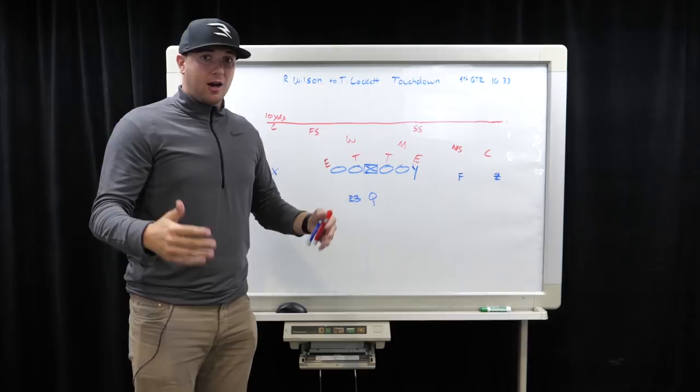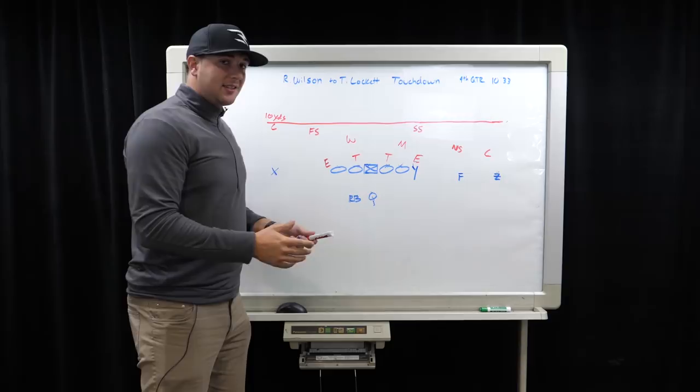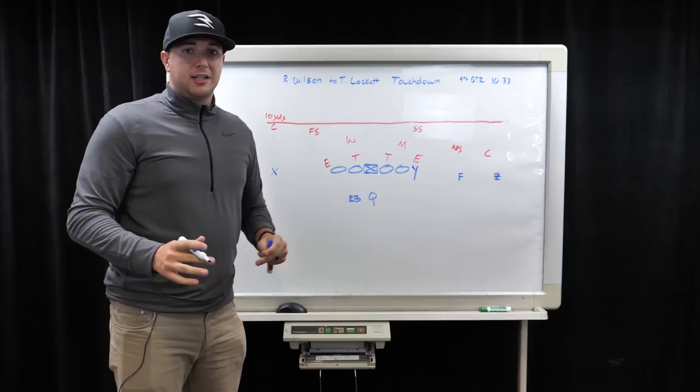So the play design, the original play design, and this is where it gets cool, is that this was a run call. And what Russell did was he didn't check out of the entire play. He just made a route adjustment to Tyler Lockett.